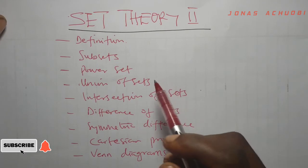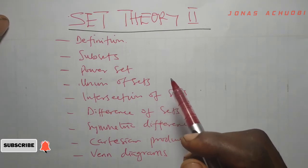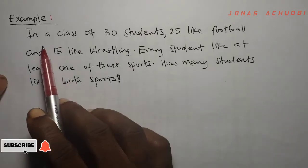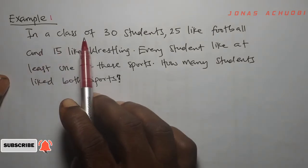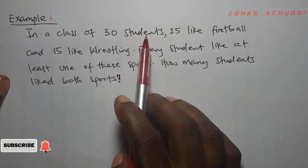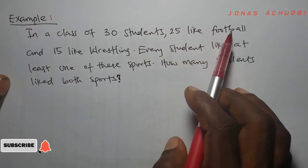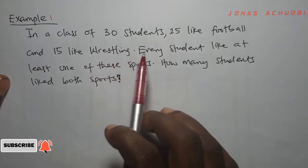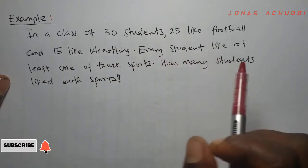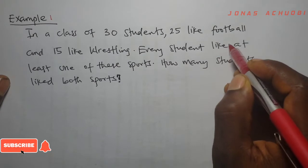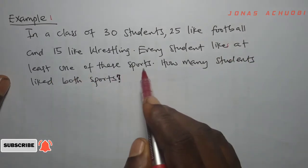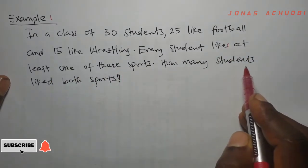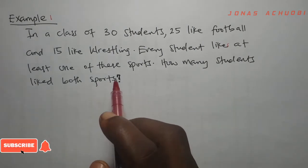In today's lesson, we shall use Venn diagrams to solve the following problem: In a class of 30 students, 25 like football and 15 like wrestling. Every student likes at least one of these sports. The question is, how many students liked both sports?